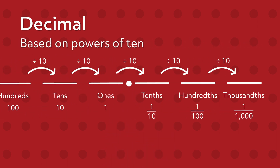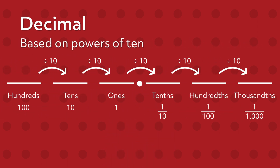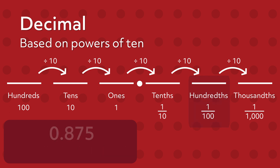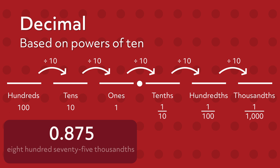Decimals are based on powers of 10. As we move from left to right, each place value is divided by 10. The decimal 5.25 is read as 5 and 25 hundredths. Since 25 comes after the decimal point, this is the fractional part of the number. We say 25 hundredths because the last digit 5 is in the hundredths place. The decimal 0.875 is read as 875 thousandths, because the last digit 5 is in the thousandths place.